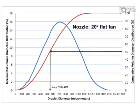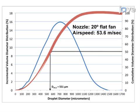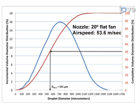These data are for a 20-degree flat fan aerial spray nozzle with a number 15 orifice, operated at 207 kPa and with an airspeed of about 54 meters per second. The blue curve gives the percentage of the total spray volume in droplets within each of 31 measurement bins used in the laser diffraction system setup. The red curve is the same data plotted as a cumulative distribution, used to find the range of droplet diameters that contain a given percentage of the total spray volume. In this example, 50% of the spray volume is in droplets of diameter 551 micrometers or smaller.